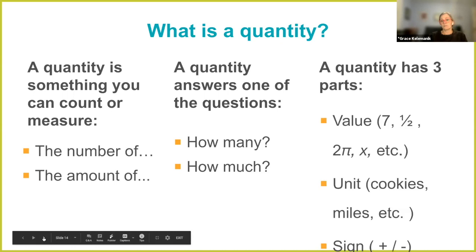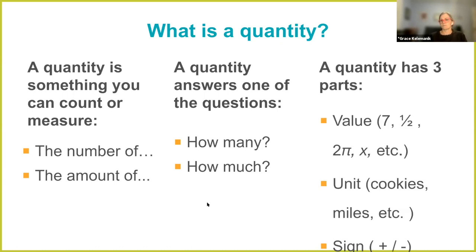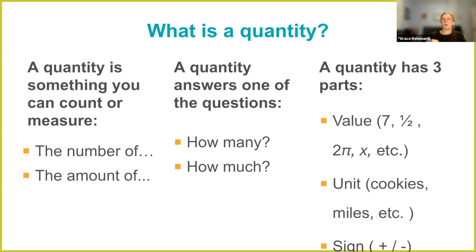Here's the cool part: a quantity has three parts to it. It has a value — like seven, or a half, or two pi — or if we don't know the value, we let it be x, or in third grade maybe an open square or a line with a question mark. Sometimes we know the value, sometimes we don't, but if we don't know the value, it doesn't mean the quantity isn't there. The quantity also has a unit — it can be cookies, miles, or glasses of chardonnay — and the quantity has a sign: it's either positive or negative. So a quantity is a much bigger idea than a number, although a number can be a clue that a quantity is lurking somewhere.